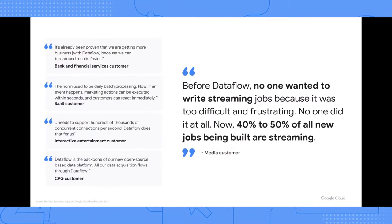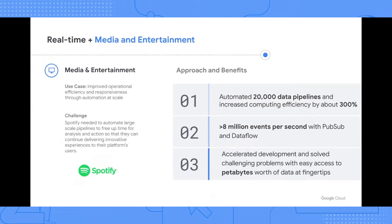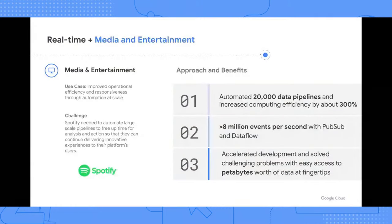A few customer quotes: before Dataflow, no one wanted to write streaming jobs because it was too difficult and frustrating — now 40 to 50% of all our jobs are built on streaming. Twitter processes 400 billion events per day using Dataflow and Pub/Sub — that's 3 million events per second. Spotify has 20,000+ concurrent Dataflow pipelines running, processing about 8 million events per second sent to Pub/Sub and Dataflow.